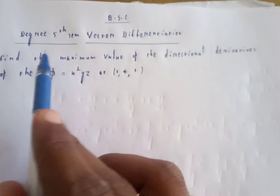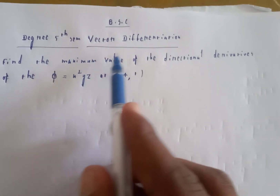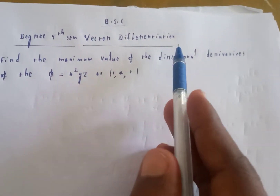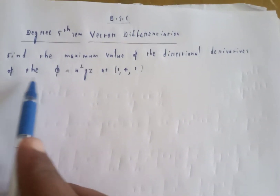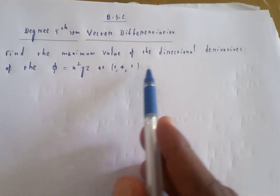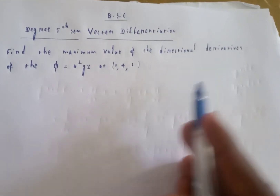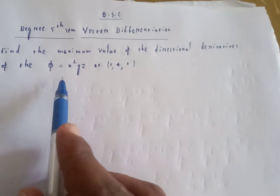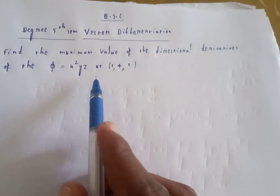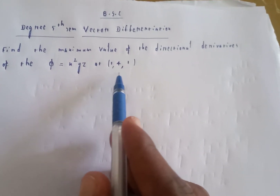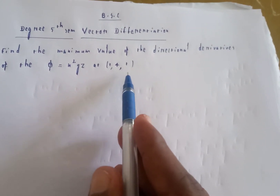Welcome to my channel. BSc degree, vector differentiation. Find the maximum value of the directional derivatives of phi equal to x squared yz at the point (1, 4, 1).